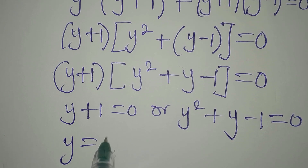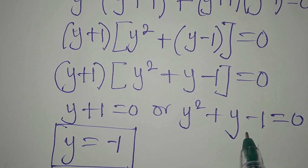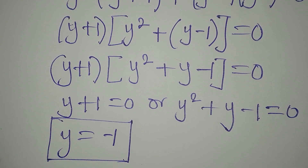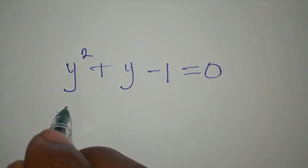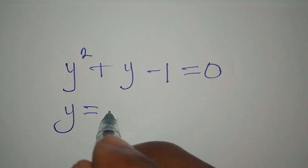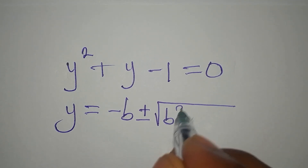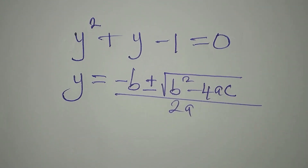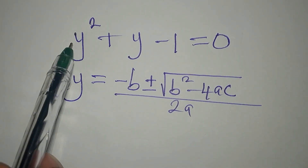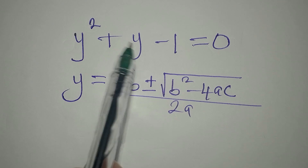On this side, y will be equal to 0 minus 1, which gives minus 1. This is one of the solutions. We will go back to this quadratic equation and solve it using the formula. So y equals minus 1. Our a, b, c is 1, 1, and minus 1 — c is minus 1, b is 1, a is 1.